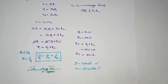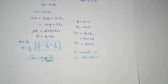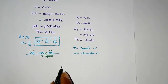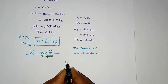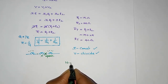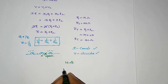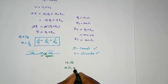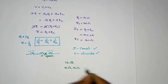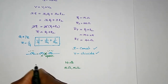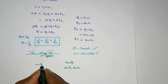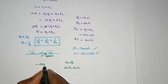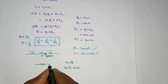For example, if I need 10 ohms resistance and I don't have a single 10 ohm resistor, I can use two 5-ohm resistors connected in series to get the required resistance.